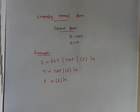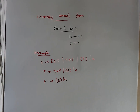Before converting any grammar to Chomsky Normal Form, three things need to be eliminated: we have to remove all unit productions, epsilon productions, and we want to eliminate all useless productions from the grammar. So before converting, we have to eliminate all useless symbols, all epsilon productions, and all unit productions.